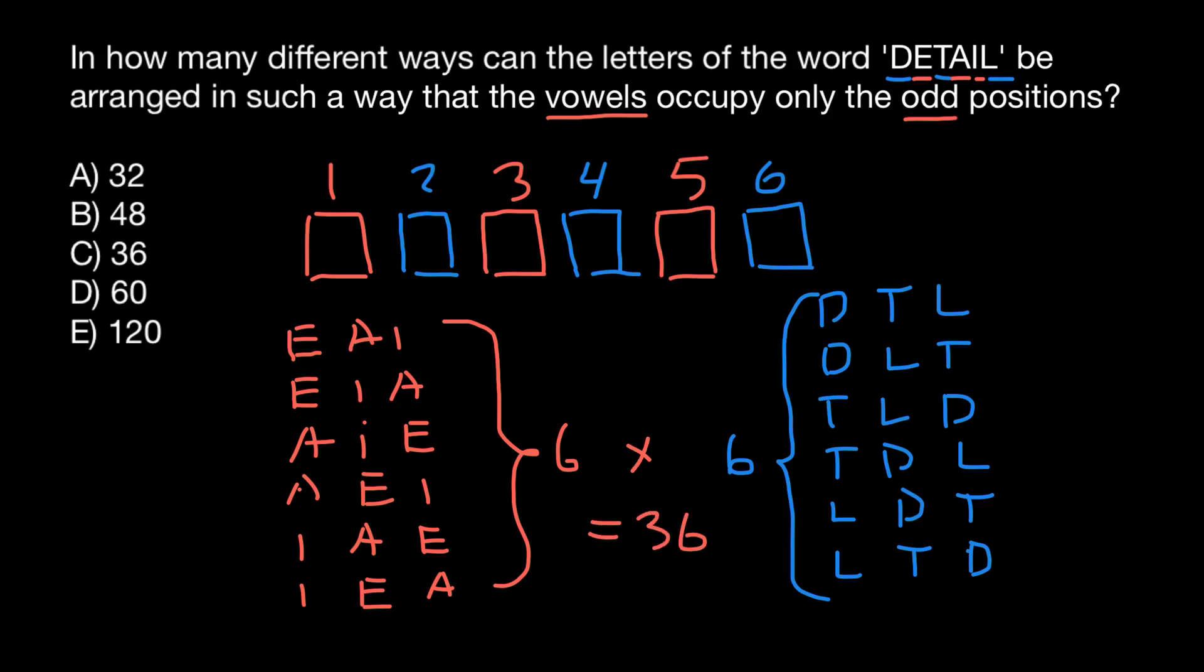So total number of combinations where vowels only can occupy first, third, and fifth positions in a word, and consonants only can occupy second, fourth, and sixth, would give us 36. And this is answer C, as you see.